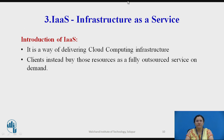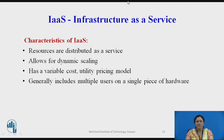The third service model is Infrastructure as a Service. IaaS is a way of delivering cloud computing infrastructure such as servers, storage, networks, and operating systems as an on-demand service, rather than purchasing servers, software, data center space, or network equipment. The client instead buys those resources as a fully outsourced on-demand service. An example is Amazon EC2. Characteristics of IaaS include: resources are distributed as services, it allows for dynamic scaling, it has a variable cost utility pricing model, and generally includes multiple users on a single piece of hardware.